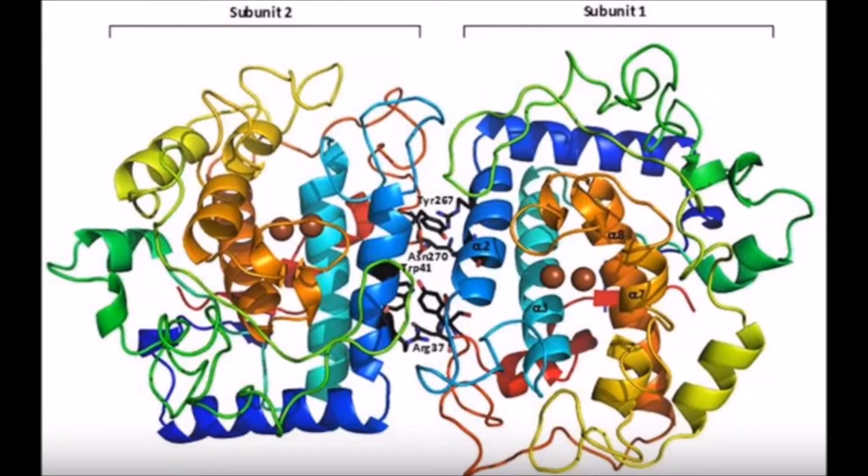The structure of the metalloenzyme tyrosinase varies greatly depending on which species it is located in. However, the basic structure in all species contains a binuclear copper center comprised of three histidine residues bonded to each copper molecule.